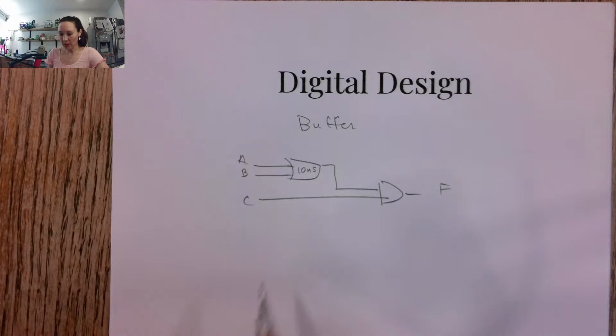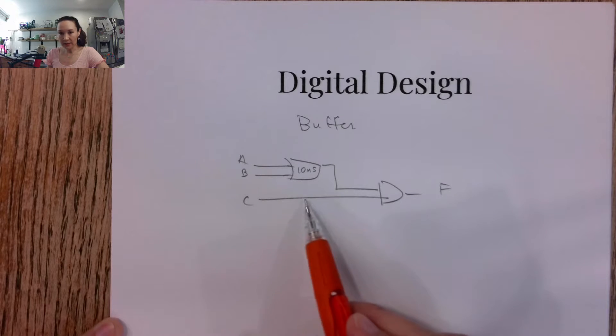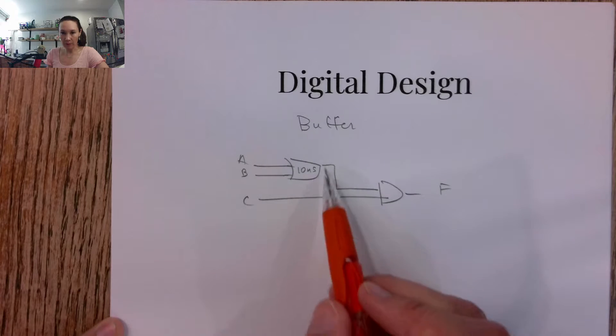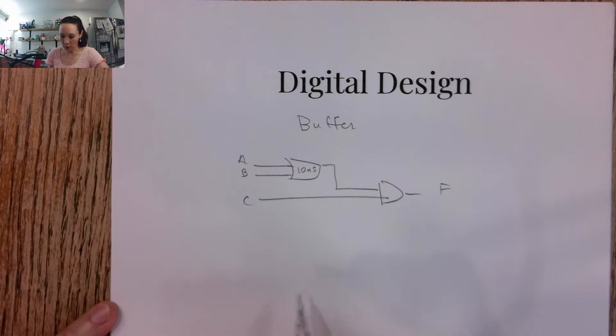So one thing that we can do is we can kind of stall C a little bit while A and B are going through this OR, and one way we can do that is we can store it into a buffer.